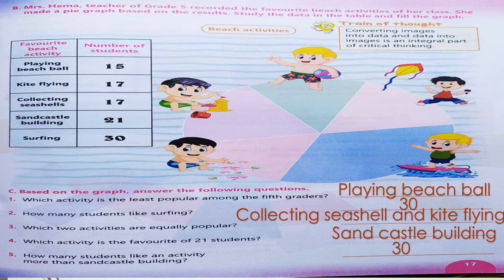How many students like surfing? You can see in the table — 30. Which two activities are equally popular? That is 17 students — an equal number — and the activities are kite flying and collecting seashells. Which activity is the favorite of 21 students? You can see in the table — sand castle building.